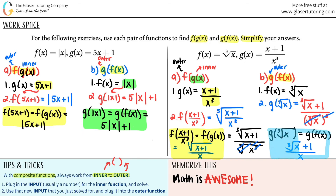Look at that — did we get the same answer? No, we didn't, and we shouldn't, because composite functions are independent. The answers look very close, but notice: in f of g of x the cube root covers the entire numerator (x plus 1), whereas in g of f of x the cube root applies only to the x in the numerator. Order matters. Math is awesome — it's just like doing a puzzle. Once you get it, it gets easier. Let me know in the comments what you thought, click subscribe, and have an awesome day!